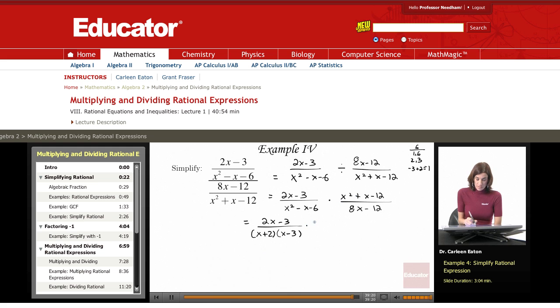Now to factor x squared plus x minus 12. Again, I've got a negative sign, so I'm going to do plus and minus. Factors of 12: 1 and 12, 2 and 6, 3 and 4.